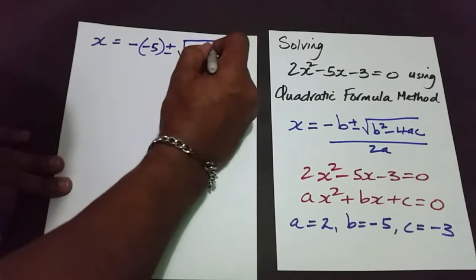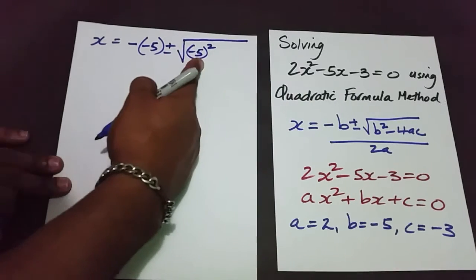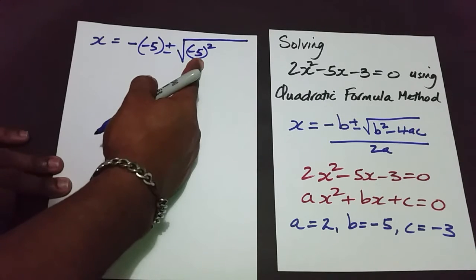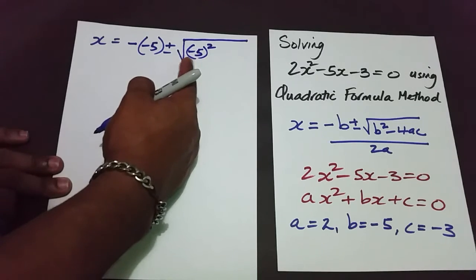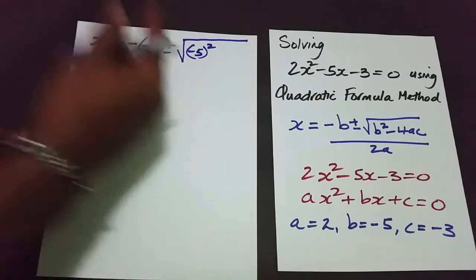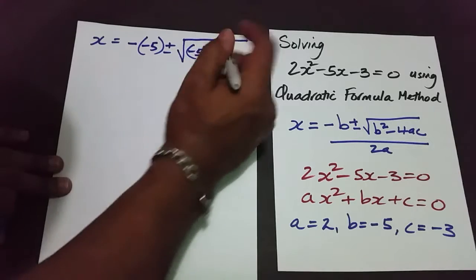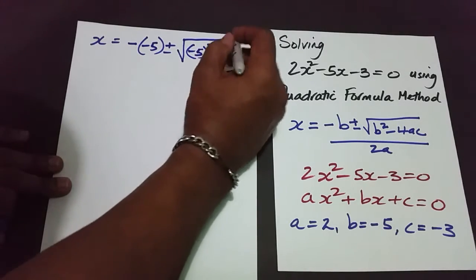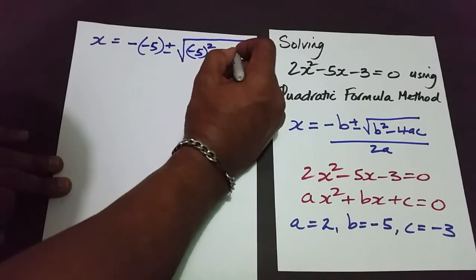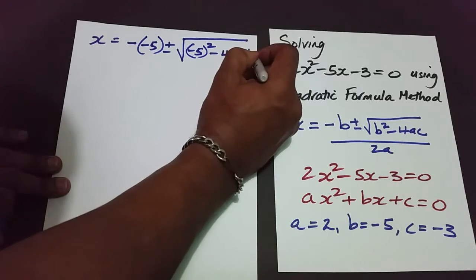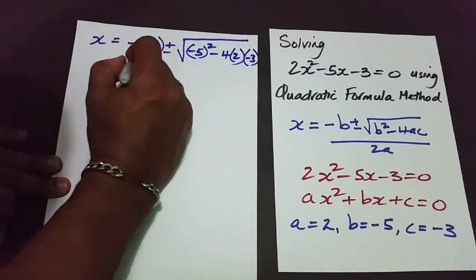Without the bracket it's an incorrect step, because negative 5 squared without the bracket means something totally different from negative 5 all squared. So you have to put these in brackets. Then minus 4, the value of a is 2, and the value of c is negative 3 — you have to be very careful.